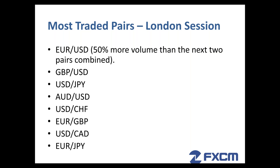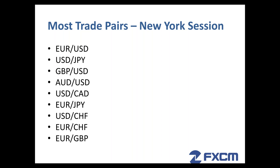It again changes slightly when we are trading the New York session. The euro/US dollar is still number one, but then the US dollar/Japanese yen moves into the second spot, followed by pound/US dollar, Aussie/US dollar, US dollar/Canadian dollar, euro/Japanese yen, US dollar/Swiss franc, euro/Swiss franc, and last but not least, euro/pound.